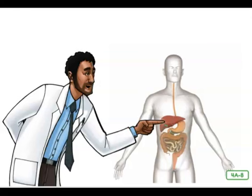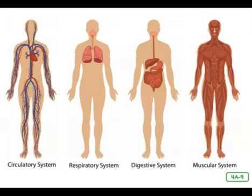Organs depend on one another, and so do the body systems — each system depends on the others to make sure your body works properly. For example, blood is carried to all parts of your body through the circulatory system. The circulatory system depends upon the respiratory system to get oxygen into the bloodstream. Without the digestive system to break down food, your blood would have no nutrients. Working together, these systems supply your cells with the food and oxygen they need to provide energy for all other systems.